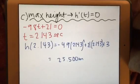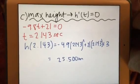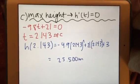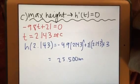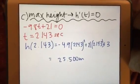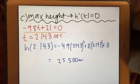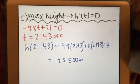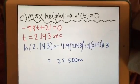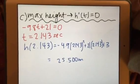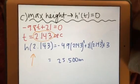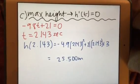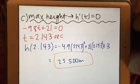Part c asks us to find the maximum height. To do that, we set the velocity equation equal to 0, because when the velocity is 0, that's the point where it's changing from a positive direction to a negative direction—the maximum height. Setting the velocity equation equal to 0: -9.8t + 21 = 0, we get t = 2.143 seconds. That's the time of the maximum height. We're asked to find the maximum height itself, so we plug this time into the position equation: h(2.143) = -4.9(2.143)² + 21(2.143) + 3 = 25.500 meters.